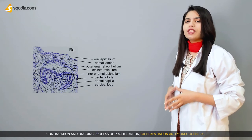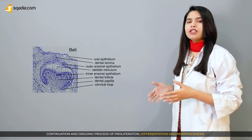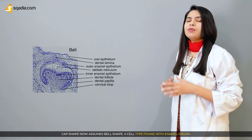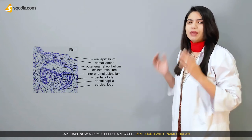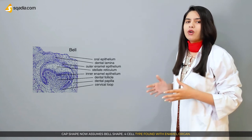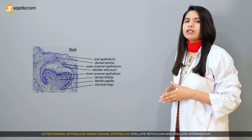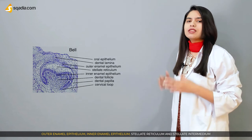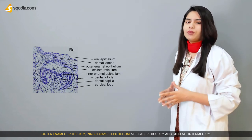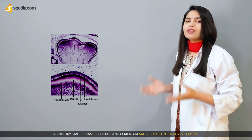The bell stage is a continuation of proliferation, differentiation, and morphogenesis. The cap shape now assumes the bell shape. Four cell types are found within the enamel organ: outer enamel epithelium, inner enamel epithelium, stellate reticulum, and stellate intermediate.